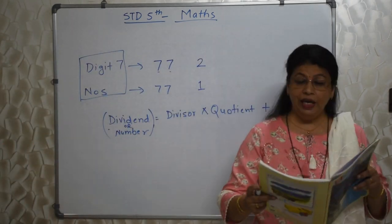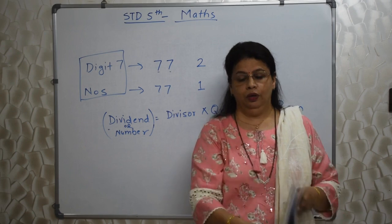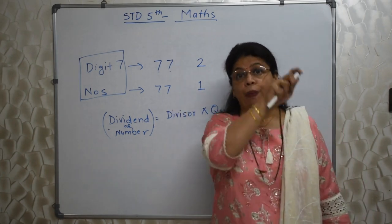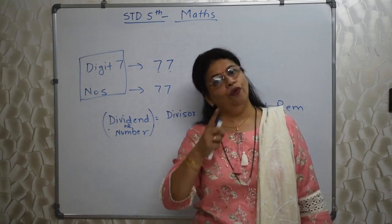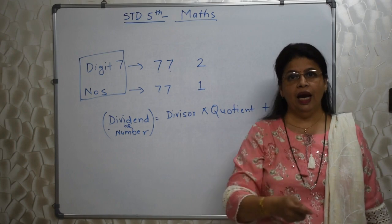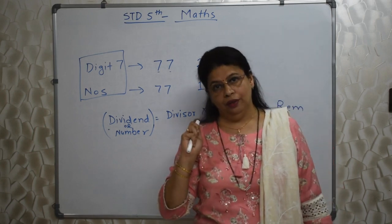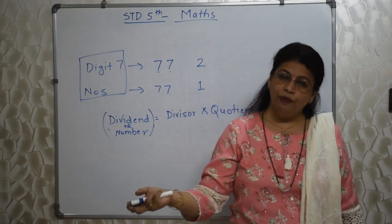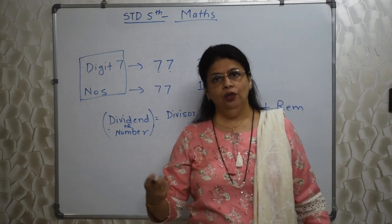Perimeter — if you want to fence something, means only the border, nothing inside, then you need to find the perimeter. Perimeter is the addition of all sides. Formula for perimeter of a square is 4 × side; for a rectangle it is 2L + 2B. If they give the cost of wire, say 15 rupees per meter, find the total wire required and multiply by the cost.